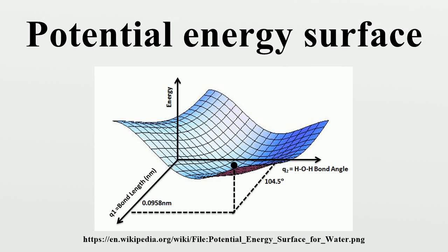A potential energy surface describes the energy of a system, especially a collection of atoms, in terms of certain parameters, normally the positions of the atoms.